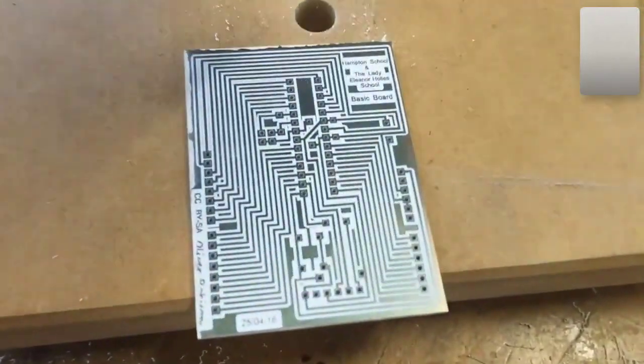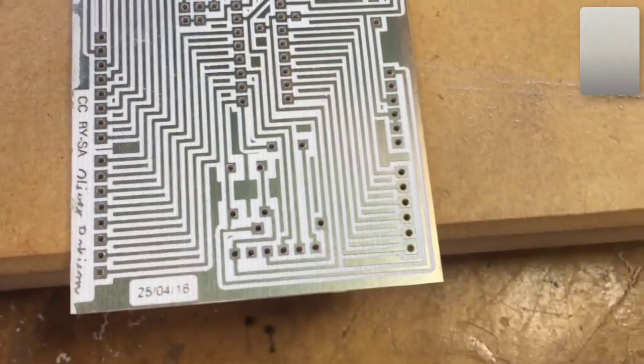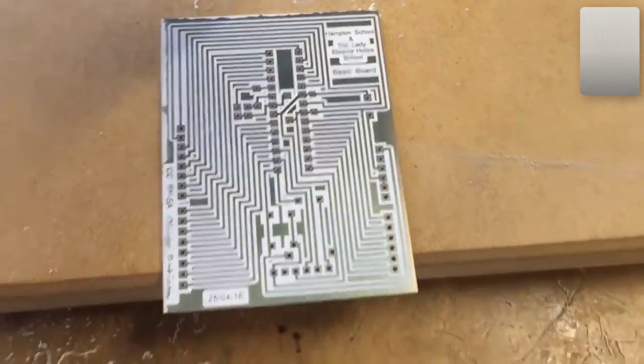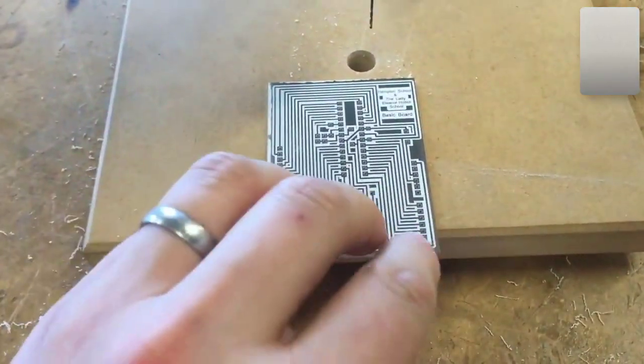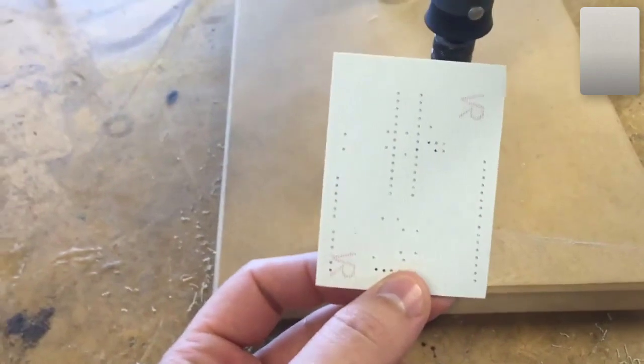Now that we've finished drilling the holes on the PCB, you can see all of them are done there. It's now time to apply our silk screen layer.